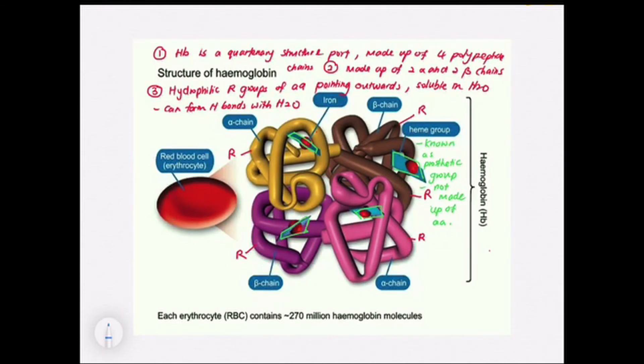How does the heme group carry oxygen? The hemoglobin actually has iron, which is Fe2+, that is capable of binding to oxygen reversibly, forming oxyhemoglobin.